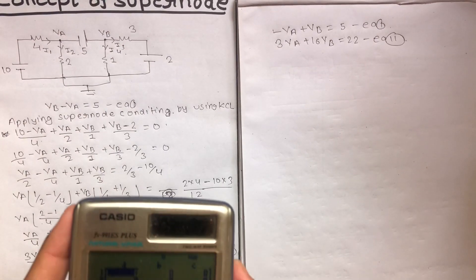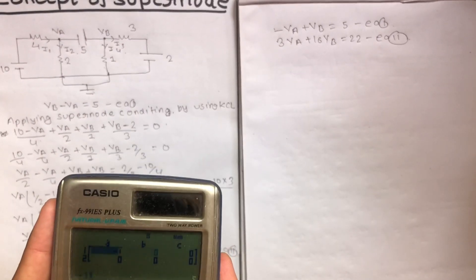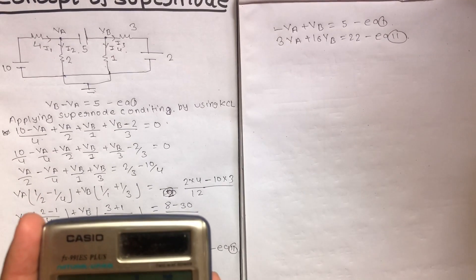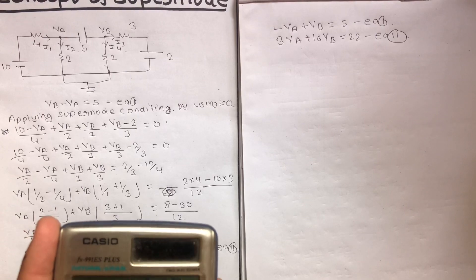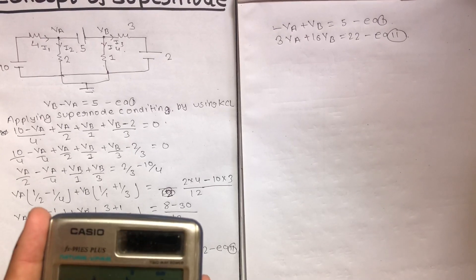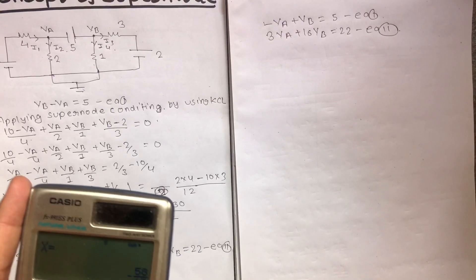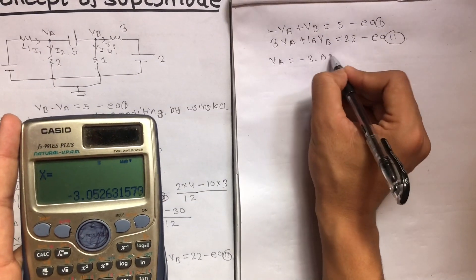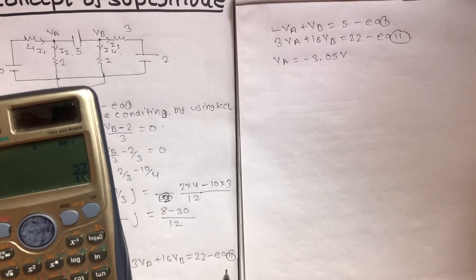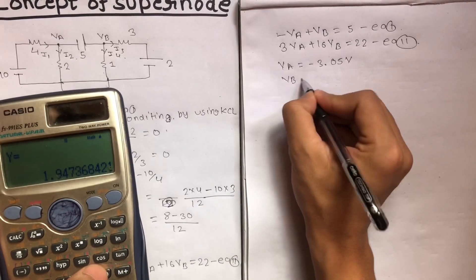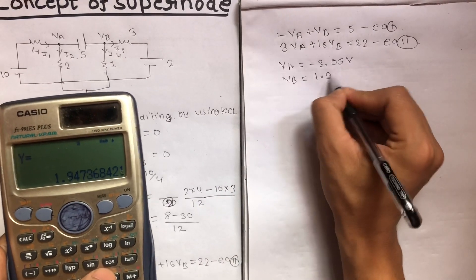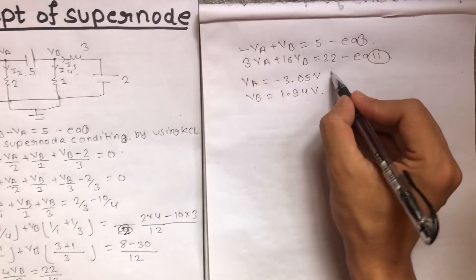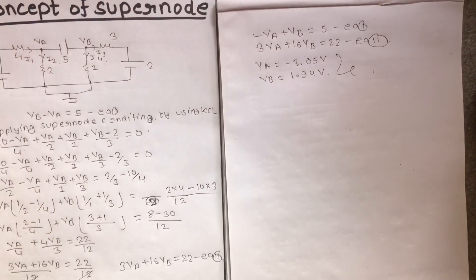Using a matrix method with the values [1, -1 | 5] and [3, 16 | 22], solving gives VA equals approximately minus 3.05 volts and VB equals approximately 1.94 volts. This is how we find the node voltages using the super node.